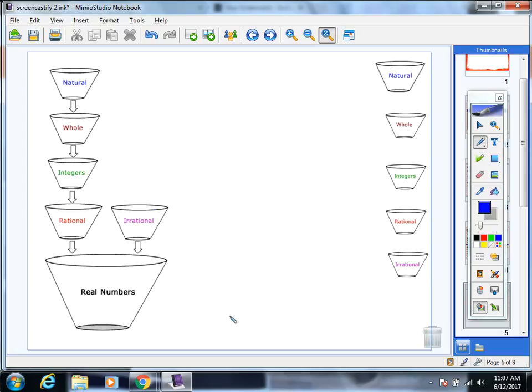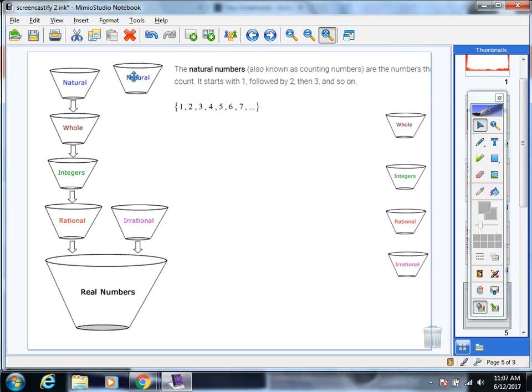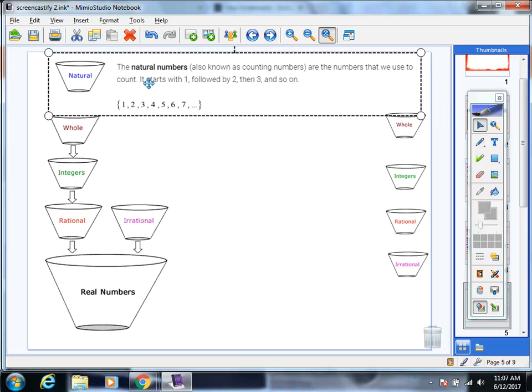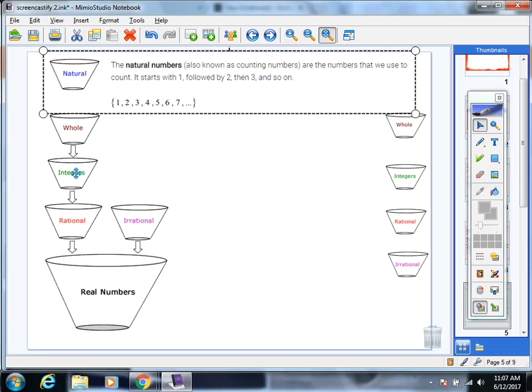Here's another visual. If you fall in the natural number category, you're also a whole number, also an integer, also a rational, also a real. So if I said the number 2, I would have to say natural, whole, integer, rational, real. That is quite a few classifications.